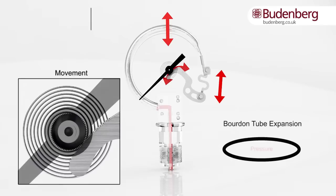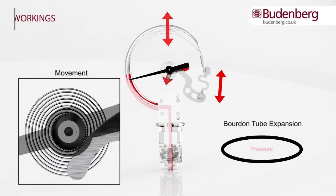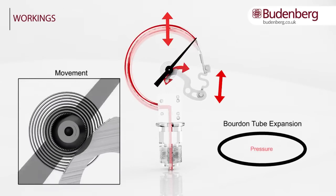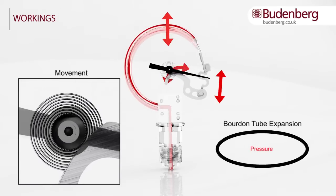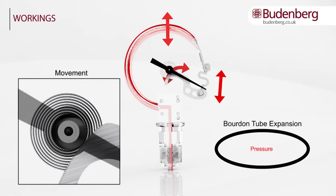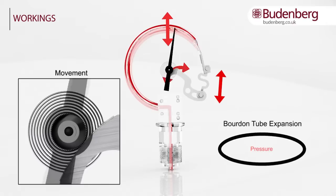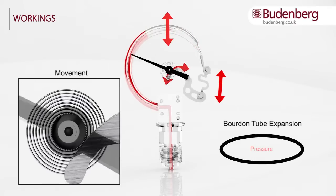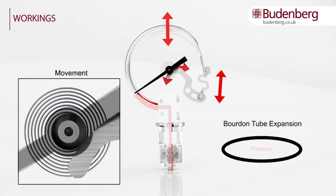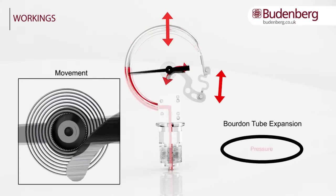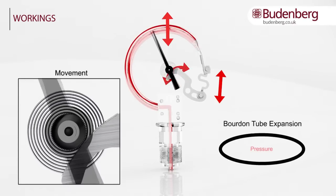As the media enters the bottom, it moves up through the connection and socket and enters the Bourdon tube. With increased pressure, the tube expands and tries to straighten out, resulting in the movement of the linkage, quadrant and gears.